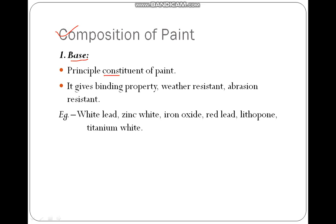The first composition is the base. It is the principal constituent of paint. It gives binding property, weather resistance, abrasion resistance, etc. Some examples of bases are white lead, zinc white, iron oxide, red lead, lithophone, and titanium white. We will see the uses of these bases later.